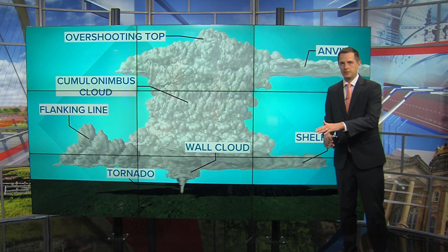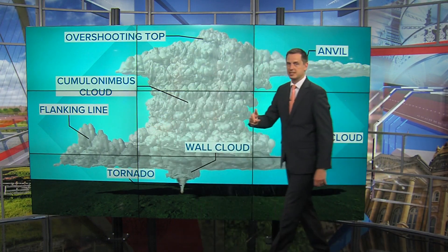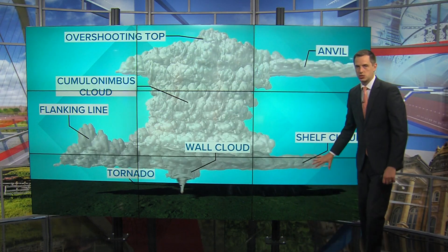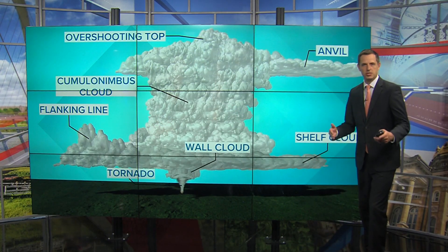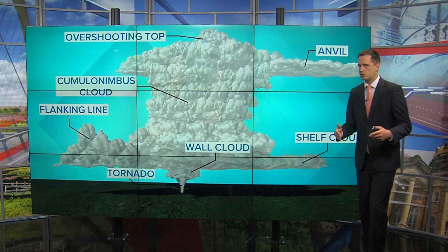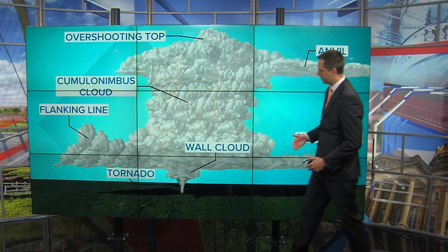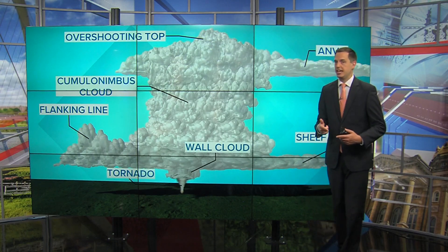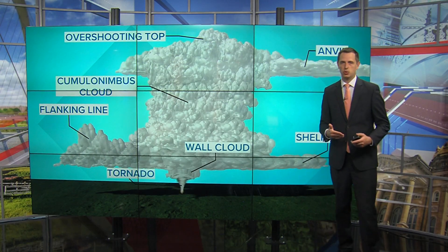At the low levels of this storm, you'll find the flanking line, which is a row of cumulus clouds found on the backside of a supercell. On the front of the storm is the shelf cloud, typically associated with a rush of cool, gusty air. The wall cloud is a lowering found below the base of the supercell, and when these rotate, they may create a tornado.